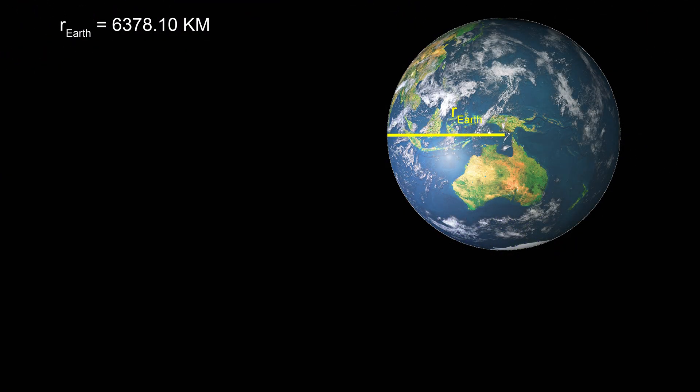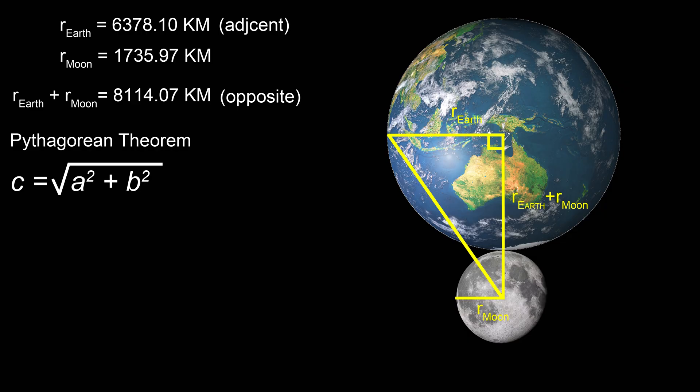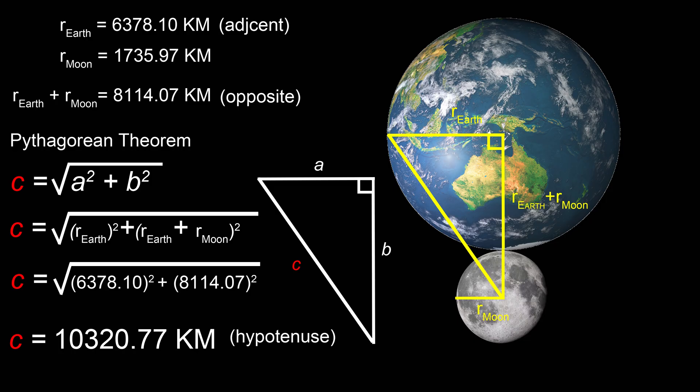And when we study the radius of the Earth, which is 6,378.1 kilometers, let's call its length the adjacent, and combined with the radius of the Moon, which is 1,735.97 kilometers, it will equal 8,114.07 kilometers. Let's call its length the opposite. Then using Pythagorean theorem, c equals the square root of a squared plus b squared, the hypotenuse would be 10,320.77 kilometers.